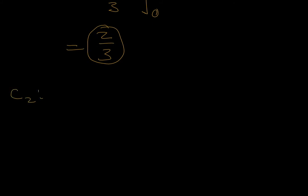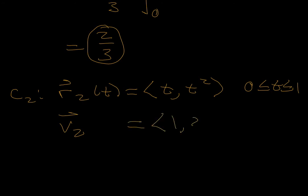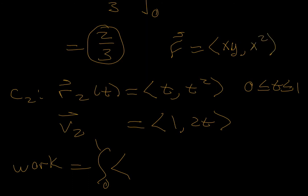Second curve was the parabola r of t is components t and t squared. Time goes from 0 to 1, and the velocity vector is 1 comma 2t. So work will be equal to the integral from 0 to 1, and we have to substitute carefully into our vector field. Quick little reminder, vector field was x times y multiplied by x squared. Or, sorry, second component is x squared. So what do we get here? x is t, y is t squared comma x squared would be t quantity squared dot product 1, 2t with respect to t.